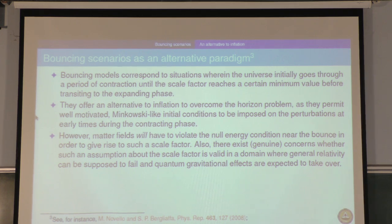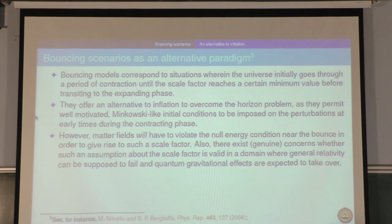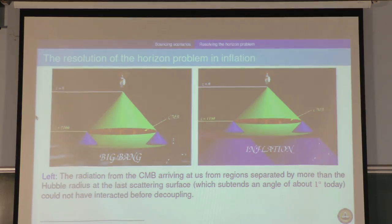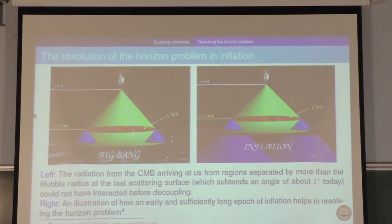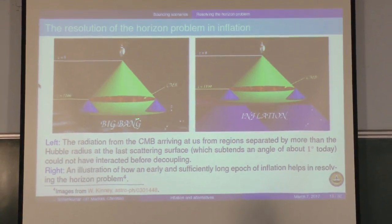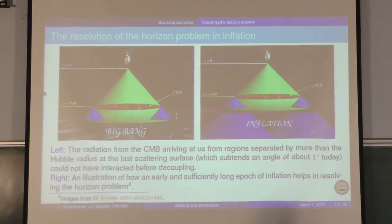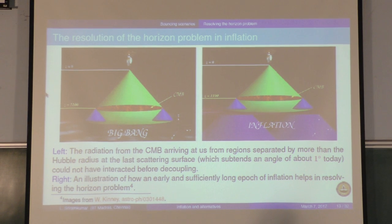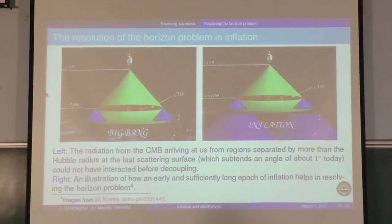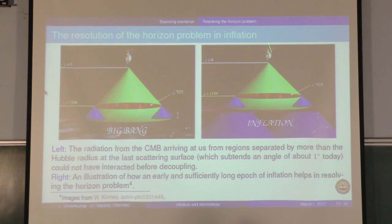What we will focus on are classical bounces. The particular model I will talk about — I will illustrate how the energy density always remains much smaller than the Planckian scales. The resolution of the horizon problem: the forward light cone is much smaller than the backward light cone in the absence of inflation. You have a vertical axis which is the conformal time coordinate. Inflation allows the conformal time to be negative, so we can start at a sufficiently early time so that the forward light cone is as big as the backward light cone.